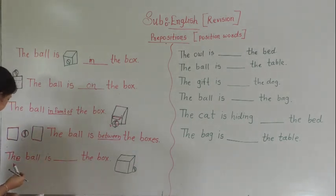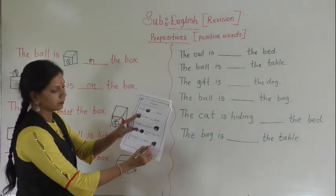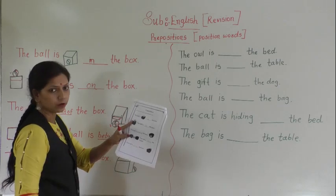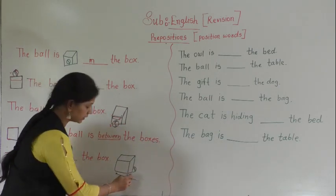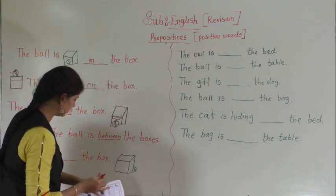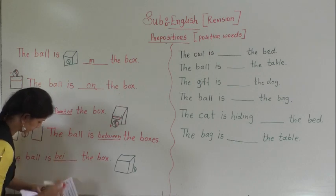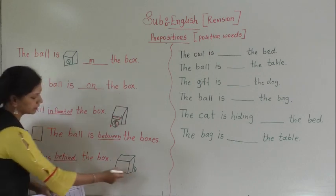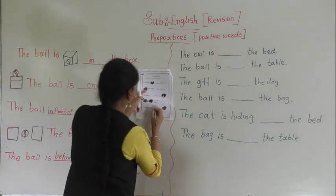Next is the last sentence. The ball is dash the box. Now just see here — here is the box. Where is the ball? It is behind. You can see the position of ball; it is behind the box. So write: behind. Where is the ball? Behind the box. Write down here: behind.